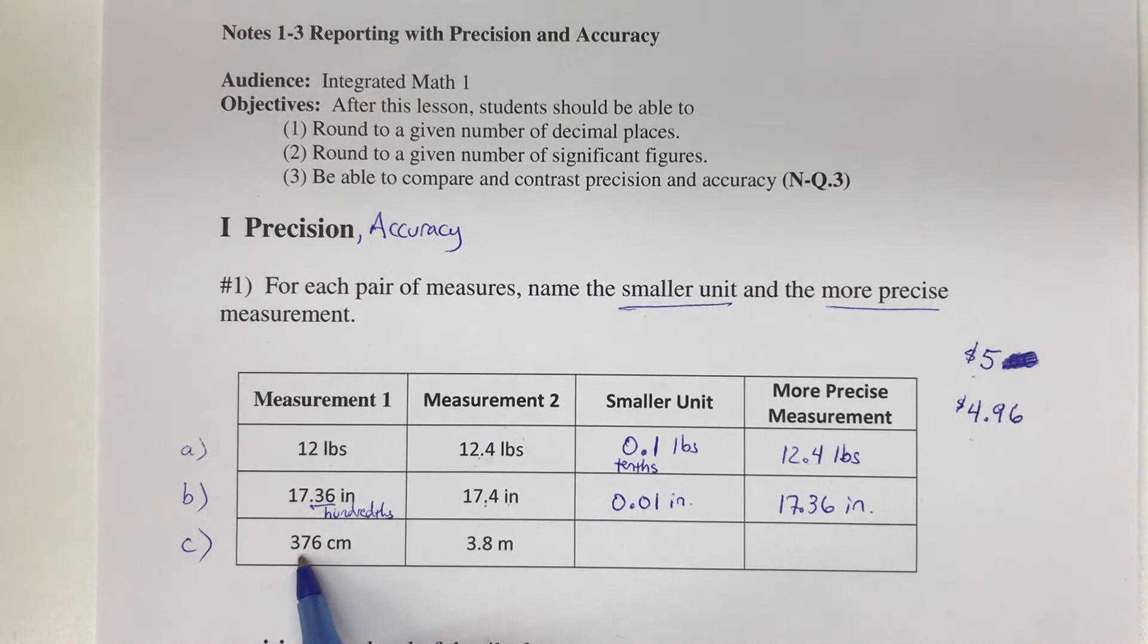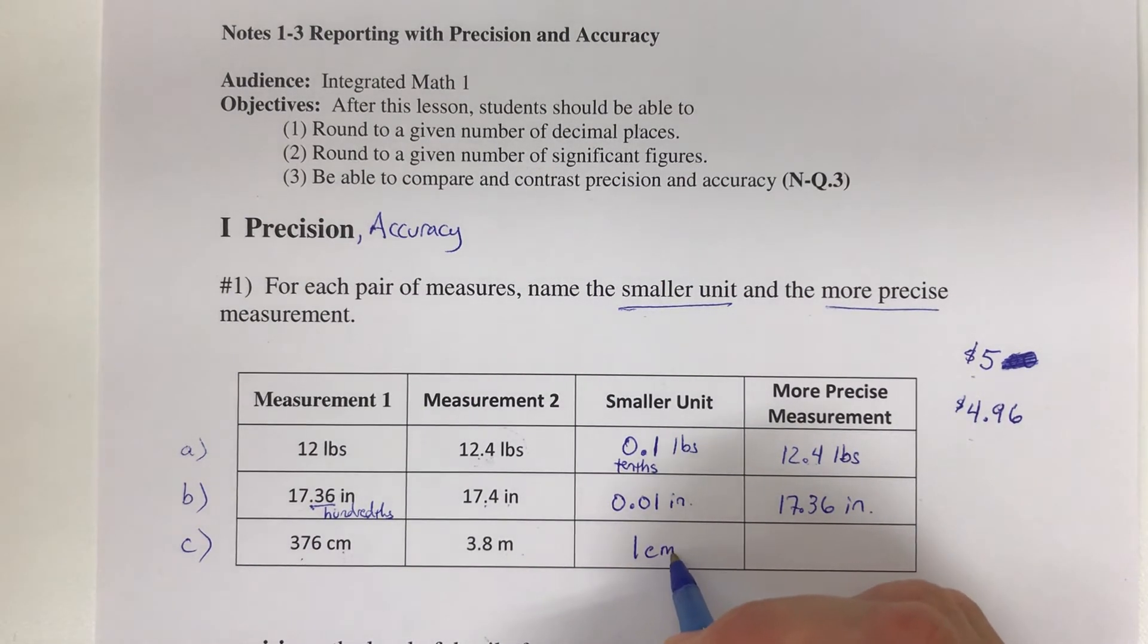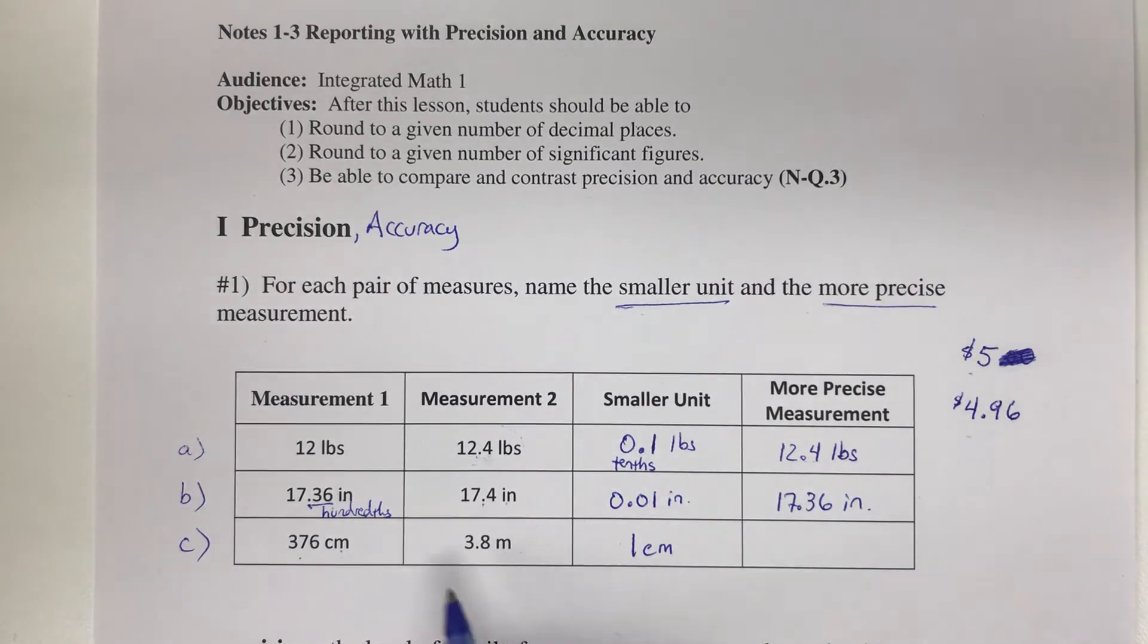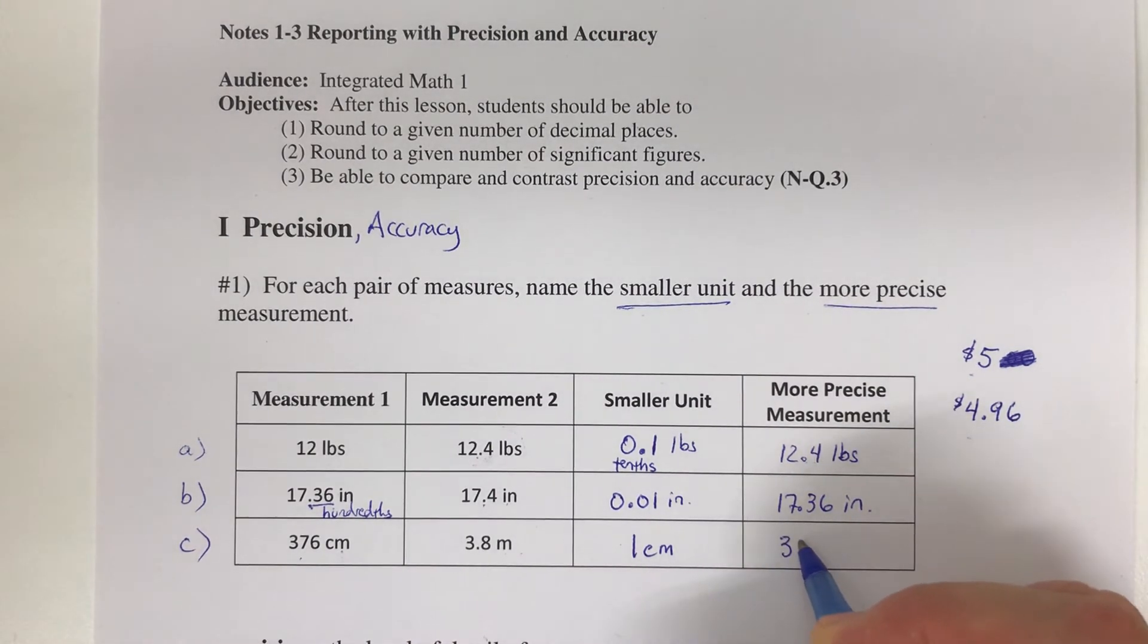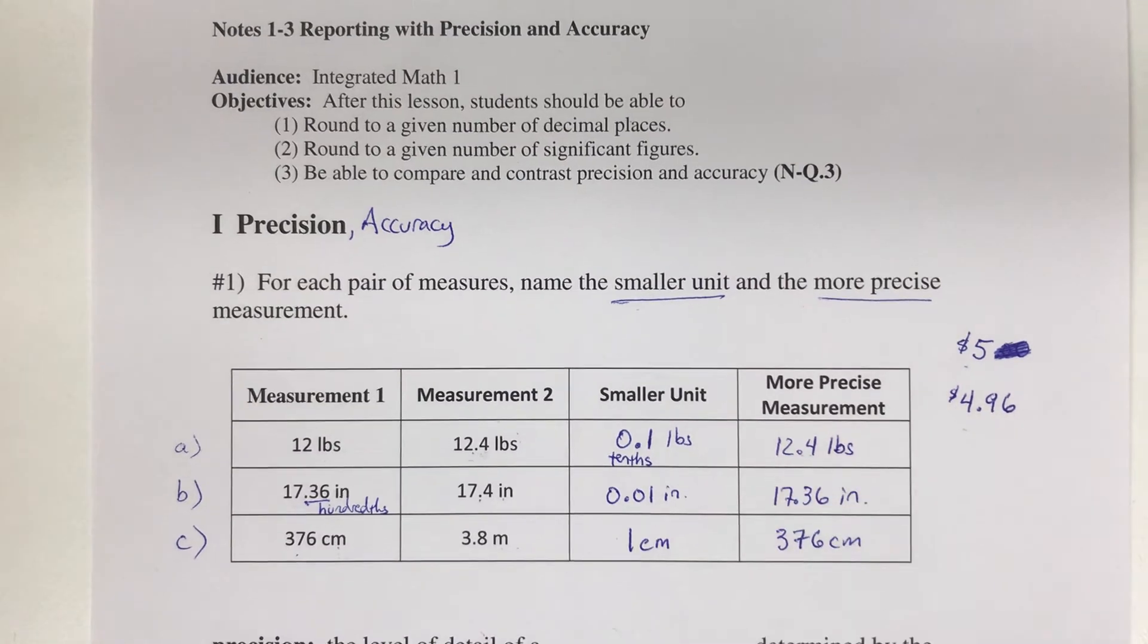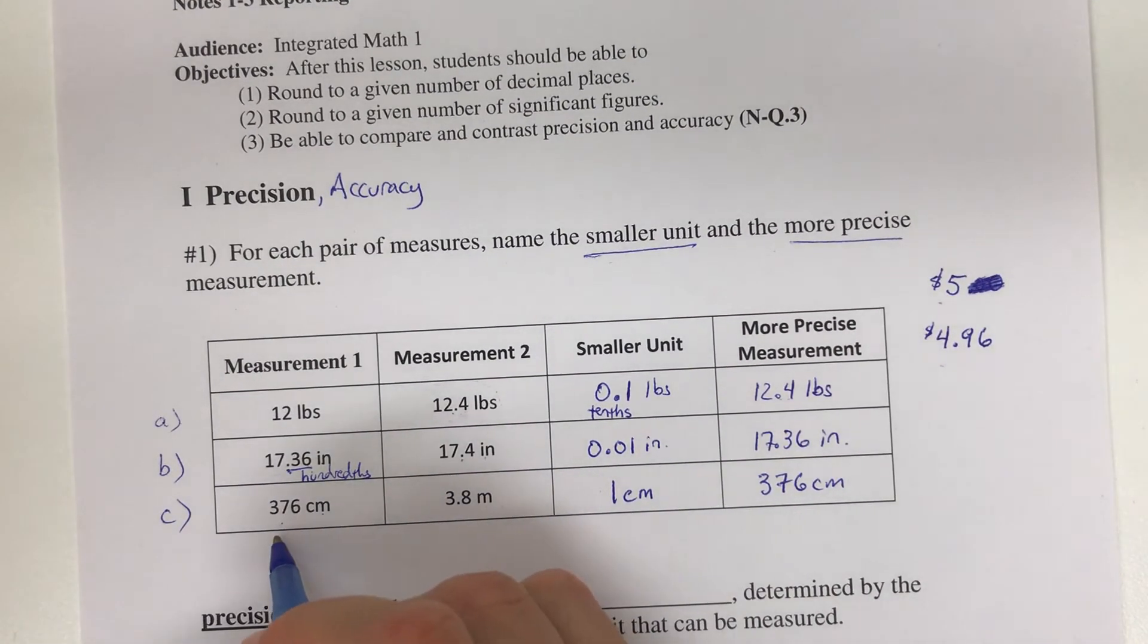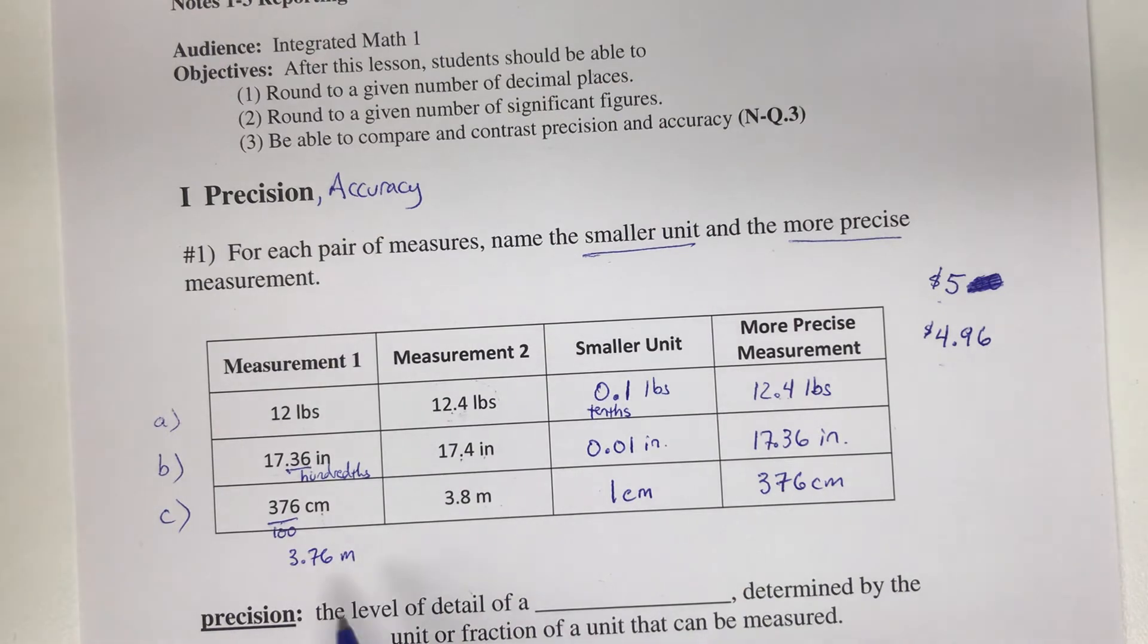In part c, we have 376 centimeters and 3.8 meters. These are different units of measurement. Centimeters are the smaller unit because it takes 100 centimeters to make one meter. The more precise measurement would be 376 centimeters. We could convert this to meters by dividing by 100 to get 3.76 meters, and 3.76 is more accurate than 3.8 because there are more places.